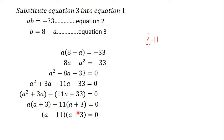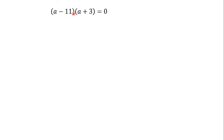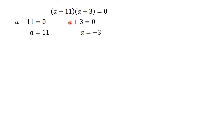When we fully factorize we get (a minus 11)(a plus 3) equals zero. Setting each factor to zero: a minus 11 equals zero gives a equals 11, and a plus 3 equals zero gives a equals negative 3. So we have two possible values for a: 11 and negative 3.